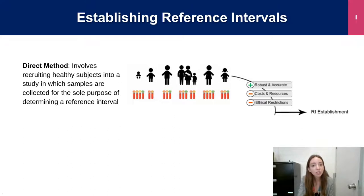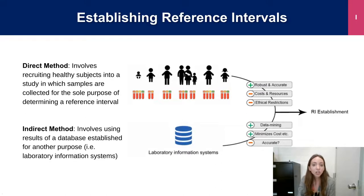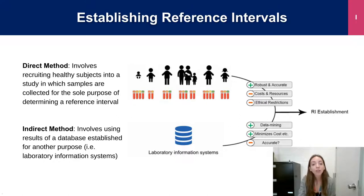However, the limitations of the direct method are that it is very costly and requires significant resources to recruit a healthy cohort, which is particularly exacerbated in children and adolescents. In contrast, the indirect method harnesses the power of stored laboratory data located in your LIS system or other patient databases to create a reference interval. Indirect methods have been around for a while but have been gaining traction in the past few years due to improvements in the statistical models available to laboratory scientists.